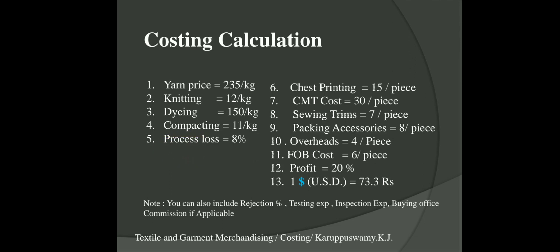We also add process loss. If you give 100 kg of yarn in knitting, you get around 92 kg of finished fabric — the remaining 8 kg becomes loss. For single jersey the loss percentage is around 8%. Chest printing cost is around 15 rupees; for a single color it is 8–10 rupees, and the price increases as you add more colors. CMT cost is 30 rupees per piece.